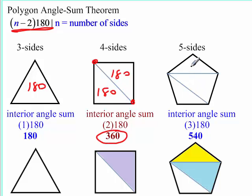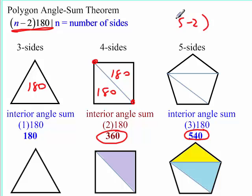Likewise, for a pentagon, it's going to be three triangles — 180, 180, 180 — that's 540. Look at the pattern: it's 3 times 180, or 5 minus 2 times 180. That's n minus 2 times 180, which is our formula.